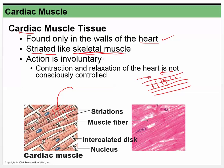Cardiac muscle is involuntary — that's a major difference from skeletal muscle, which is voluntary. You can't consciously control your heart individually. You can control the rate to some degree, but that's not actually controlling the muscle itself. We're going to see exactly how it's controlled when we cover the cardiovascular system.